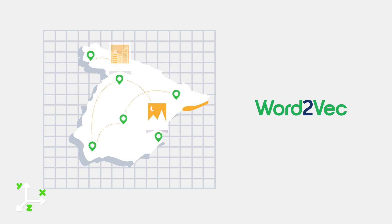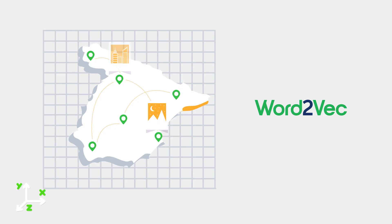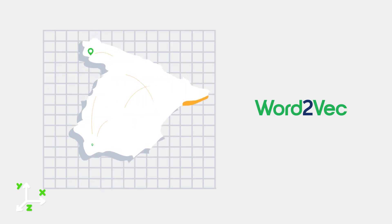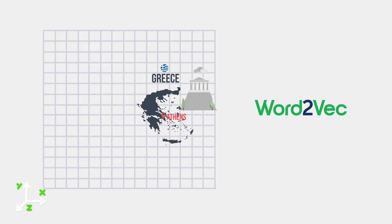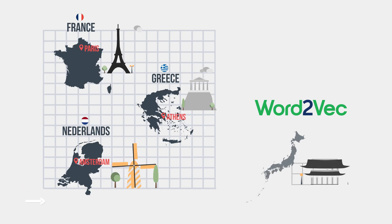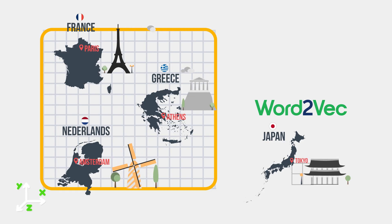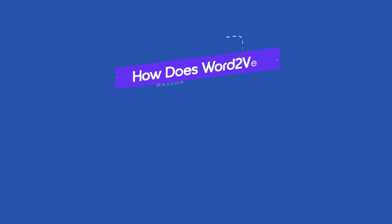Word2Vec is like a map where nearby towns represent words with similar meanings, while distant towns symbolize words with different contexts or meanings. For example, cities like Athens will be closer to Greece, Paris close to France, Amsterdam close to Netherlands, while Tokyo will be farther away since it is in a different region. Athens is close to Paris and Amsterdam because they are all European capitals, and Amsterdam is closer to Paris than to Athens due to cultural and economic ties.